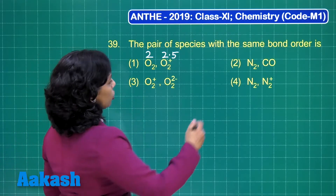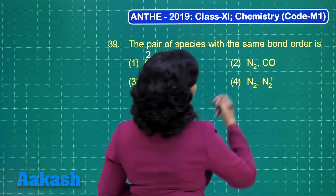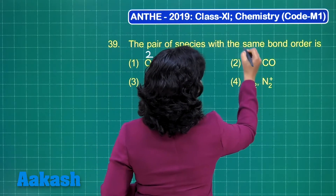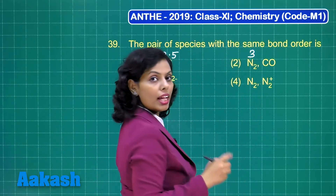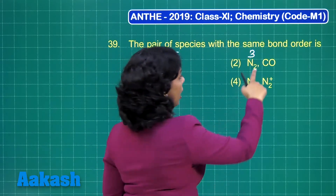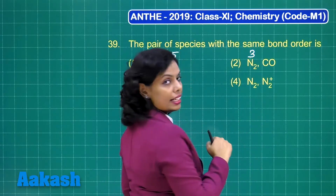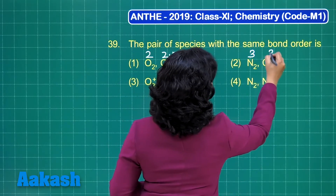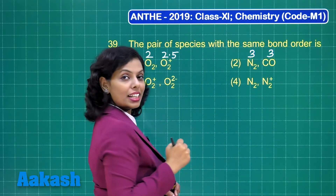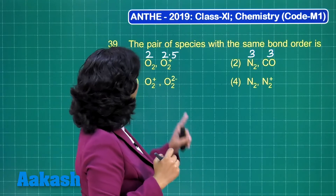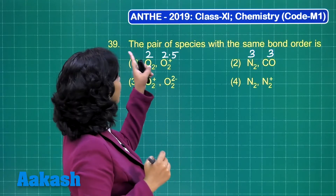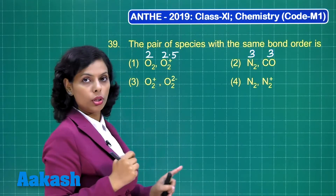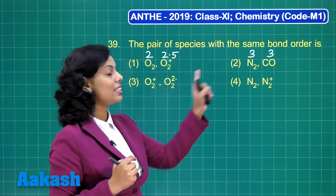Now if I talk about N₂, the bond order of N₂ is 3, and if I talk about carbon monoxide (CO), in this case also the bond order is 3. It means this is the correct answer because the question asks for the pair of species with the same bond order — N₂ and CO is that pair.